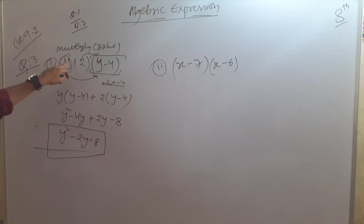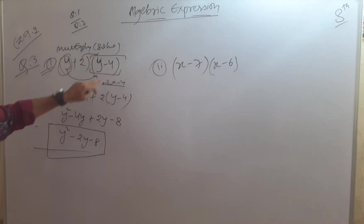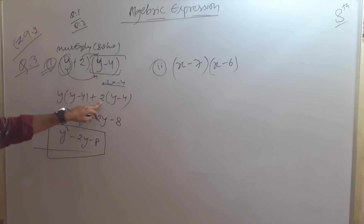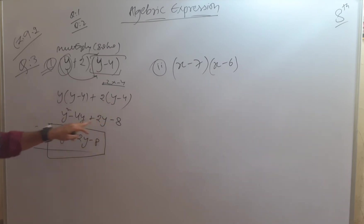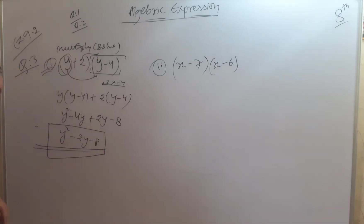Let us repeat this once more. Y multiplies the whole bracket: y into (y-4). Then 1 multiplies the whole bracket: 1 into (y-4). So y into y is y², y into (-4) is -4y. Then positive 1 into y is +y, and 1 into (-4) is -4. Combining: -4y plus y is -3y... so -4y plus 2y is -2y. y² as it is, minus 8 as it is — that is our final solution.